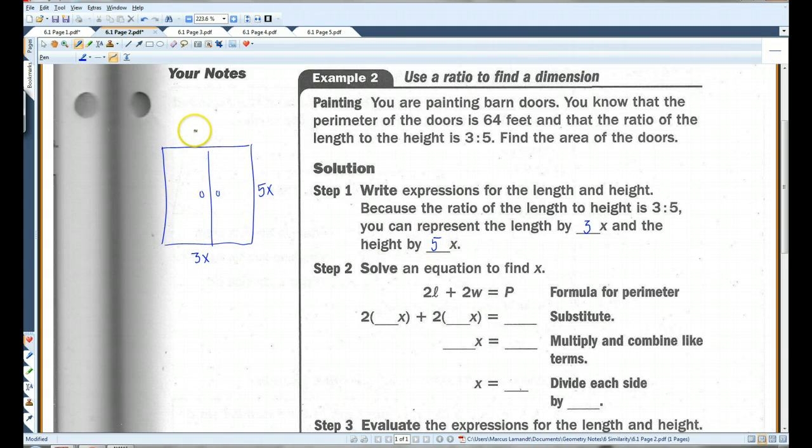Now, if this is 3x, then this is also 3x. If this is 5x, then this is also 5x. So we know that perimeter is just adding all these together. So 2 times 3x plus 2 times 5x. This has to equal the perimeter, which we know is 64.